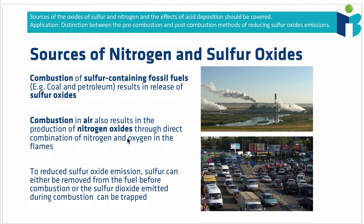So let's think about the sources of these sulfur and nitrogen oxides. Many fuels such as coal and petroleum, when they are dug out of the ground and processed, still have sulfur-containing impurities — these fuels are quite dirty. That means when they are combusted, as well as the carbon-containing species combusting in oxygen, the sulfur species also combust in oxygen in order to form gaseous sulfur oxides, which are released as a byproduct of combustion.